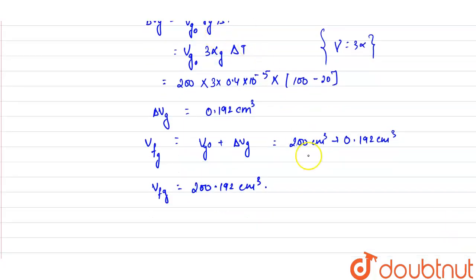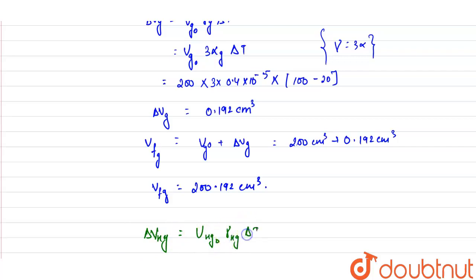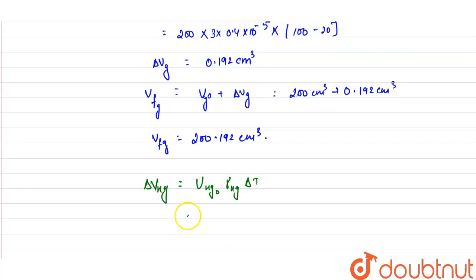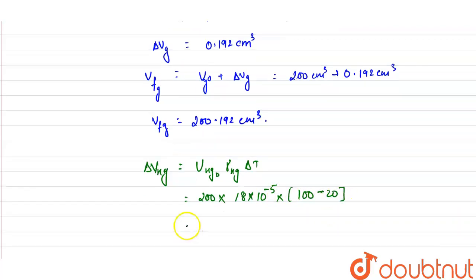Due to the temperature increase, the mercury will also expand. The change in volume of mercury equals the initial volume of mercury into gamma of mercury into delta T. The initial volume is 200 centimeter cube, gamma is 18 into 10 raised to the power minus 5, and the change in temperature is 100 minus 20. The change in volume of mercury comes out to be 2.88 centimeter cube.